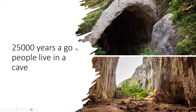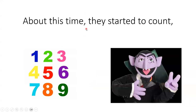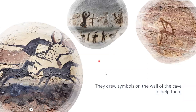25,000 years ago, people lived in caves — not in a house. About this time, they started to count. Count means 1, 2, 3, 4, 5, 6, 7, 8, 9. They drew symbols on the wall of the cave to help them — symbols like this on the wall of the cave.